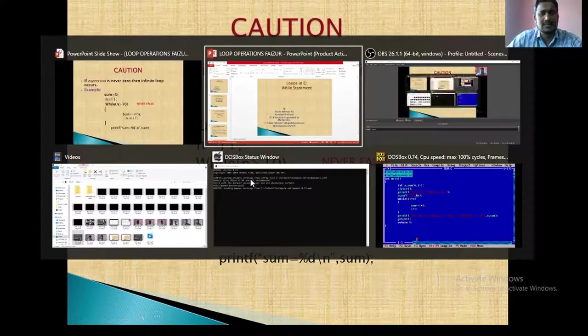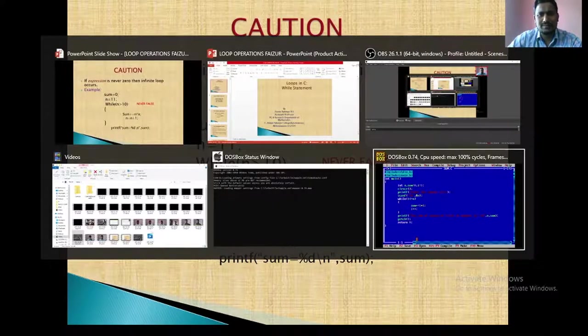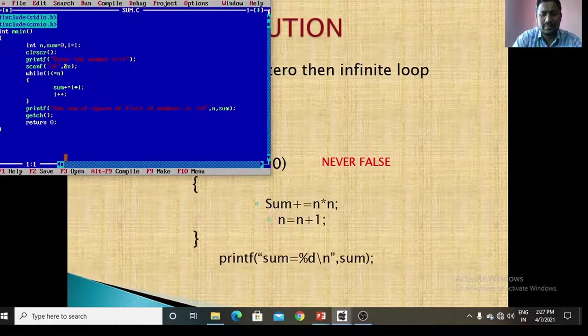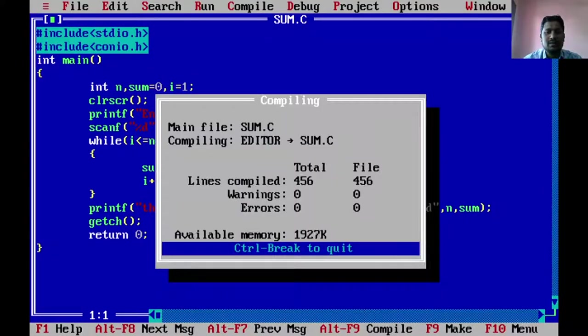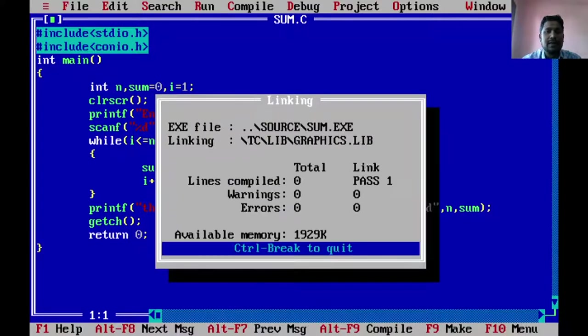So this is our example program in while statement. Here I am declaring sum equal to 0, i equal to 1. Compile is error free program, then run the program.